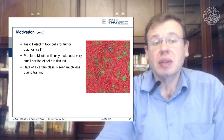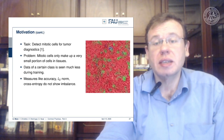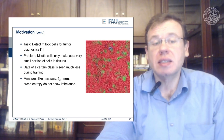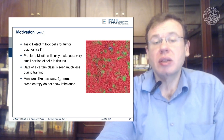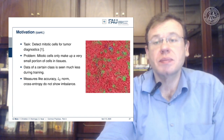The data of this class is seen much less during training, and measures like the L2 norm or cross entropy don't reflect this imbalance — so they are not very responsive to it.